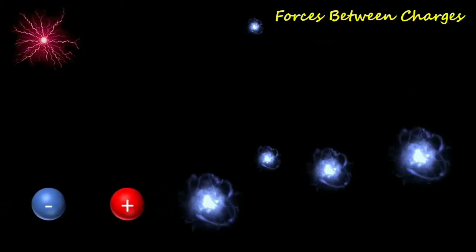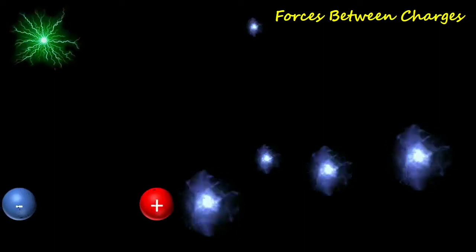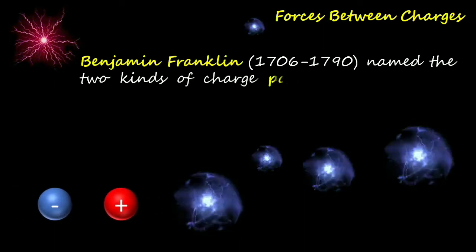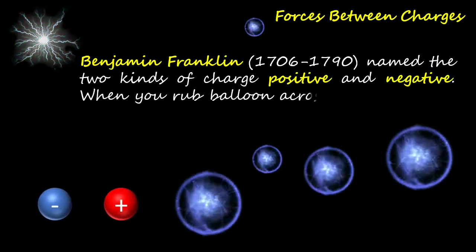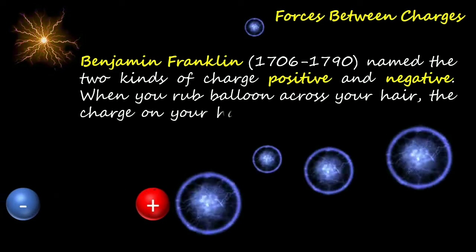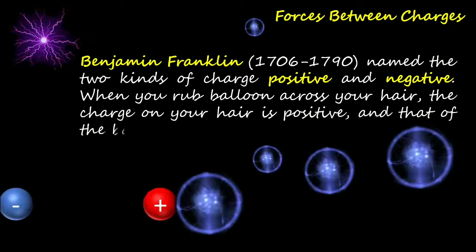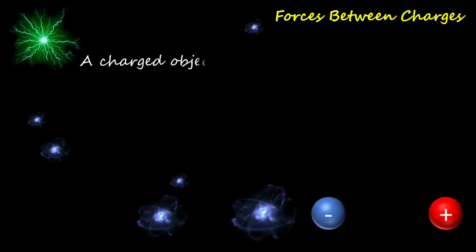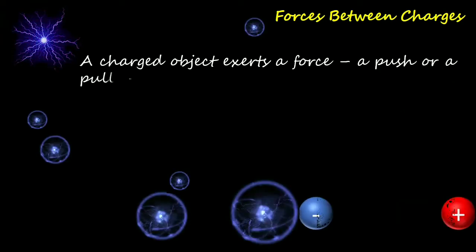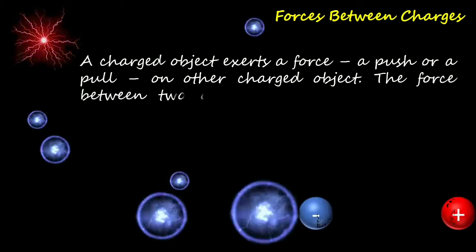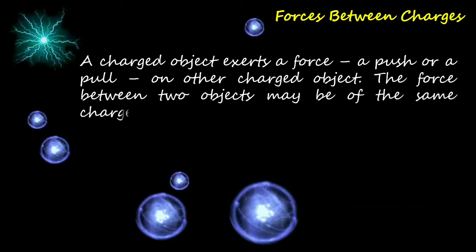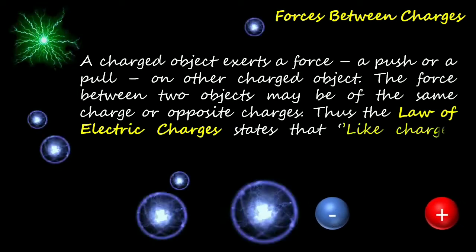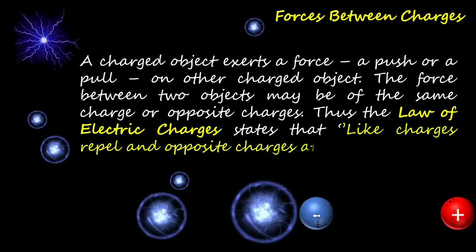Let us now explore forces between charges. Benjamin Franklin (1706–1790) named the two kinds of charge: positive and negative. When you rub a balloon across your hair, the charge on your hair is positive and that of the balloon is negative. A charged object exerts a force — a push or a pull — on other charged objects. Thus, the law of electric charges states that like charges repel and opposite charges attract.